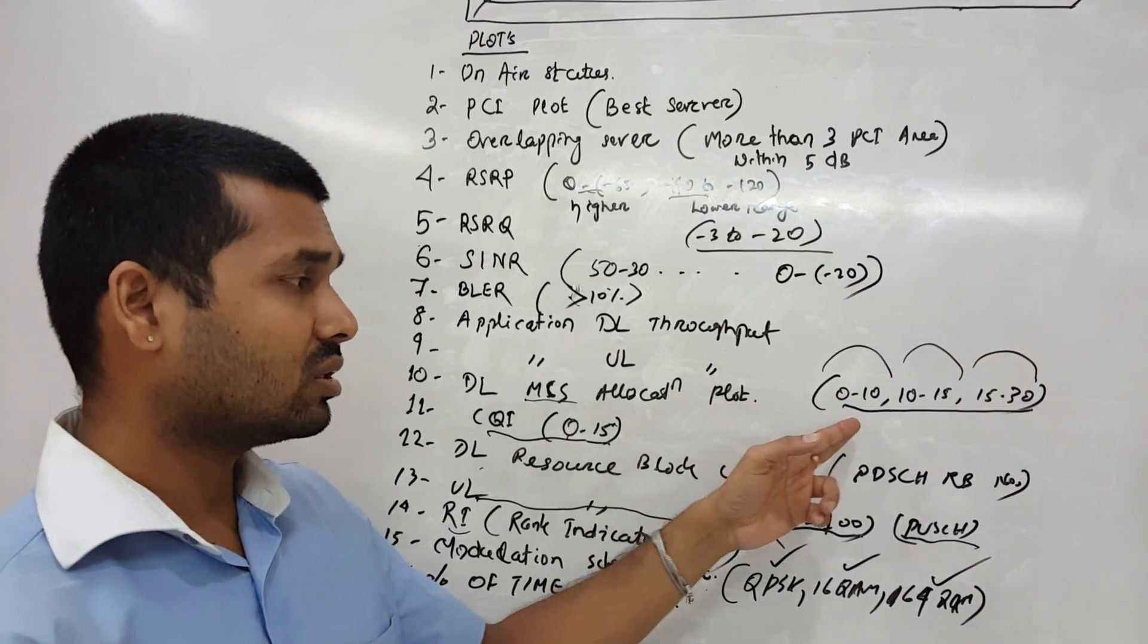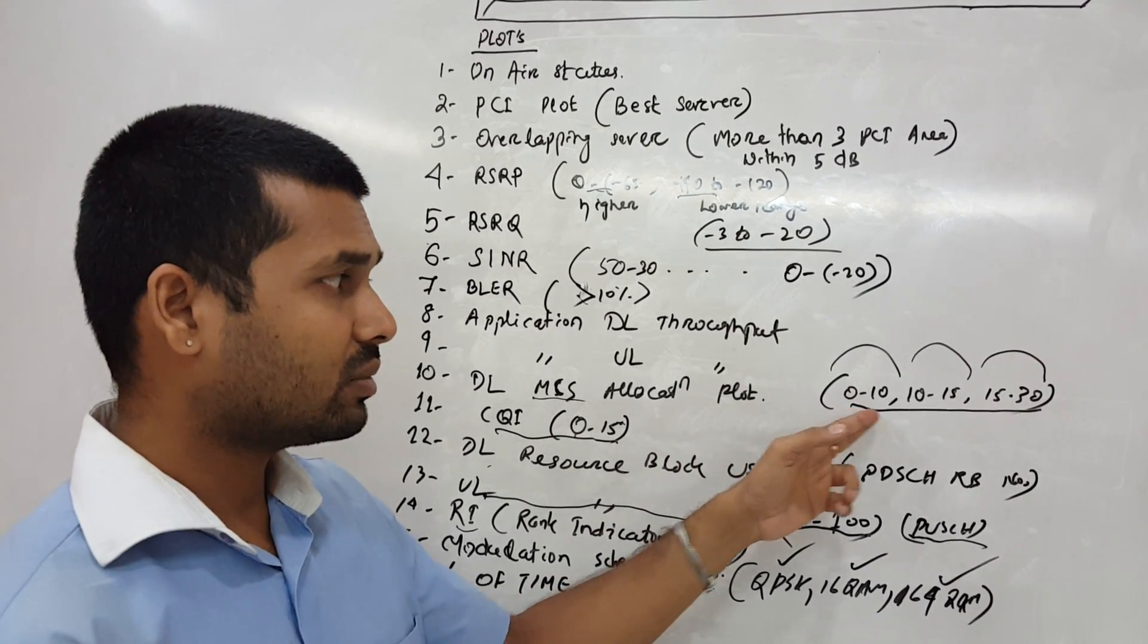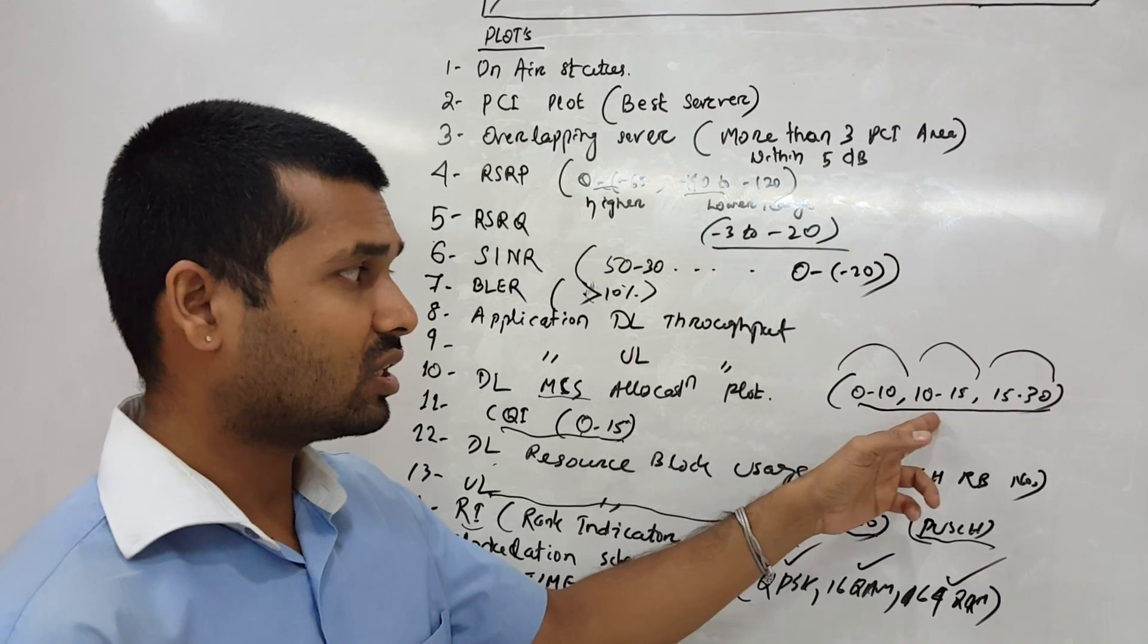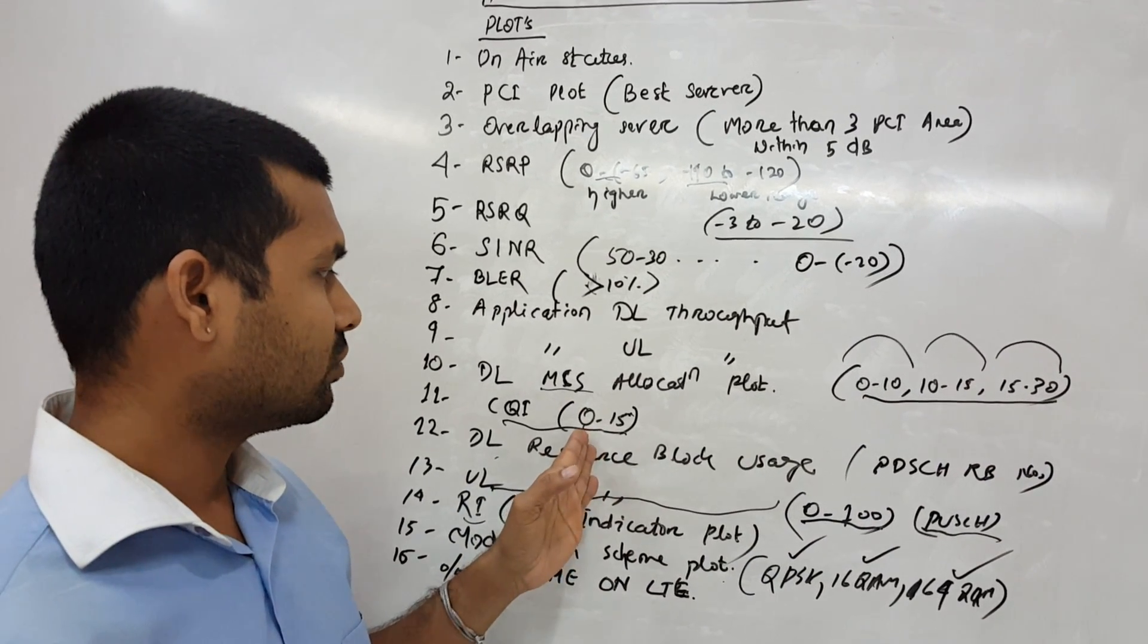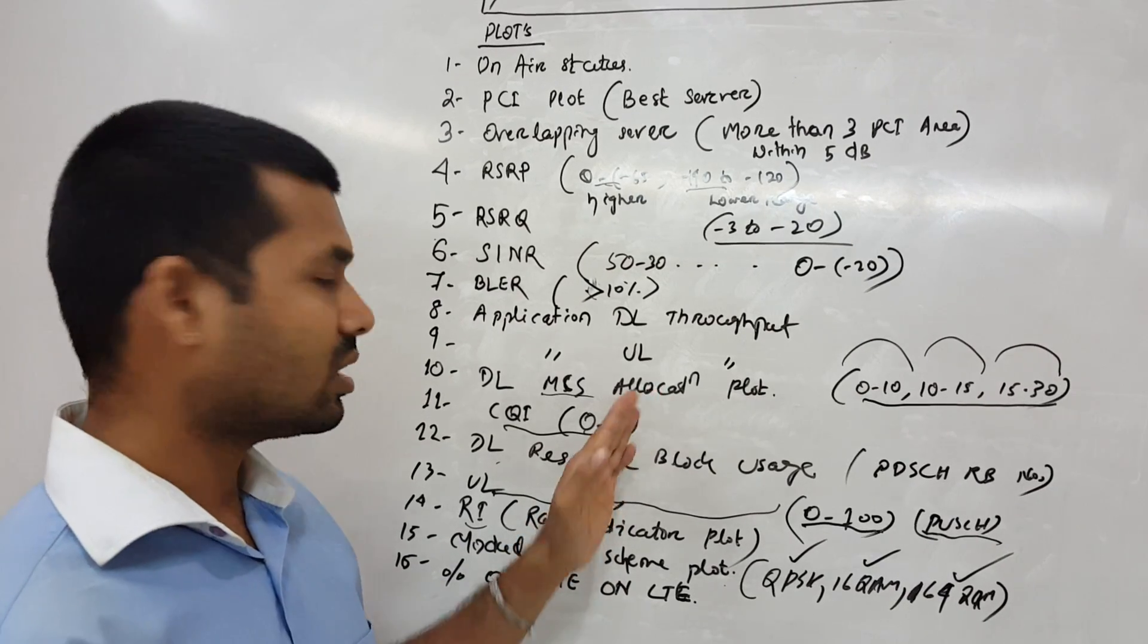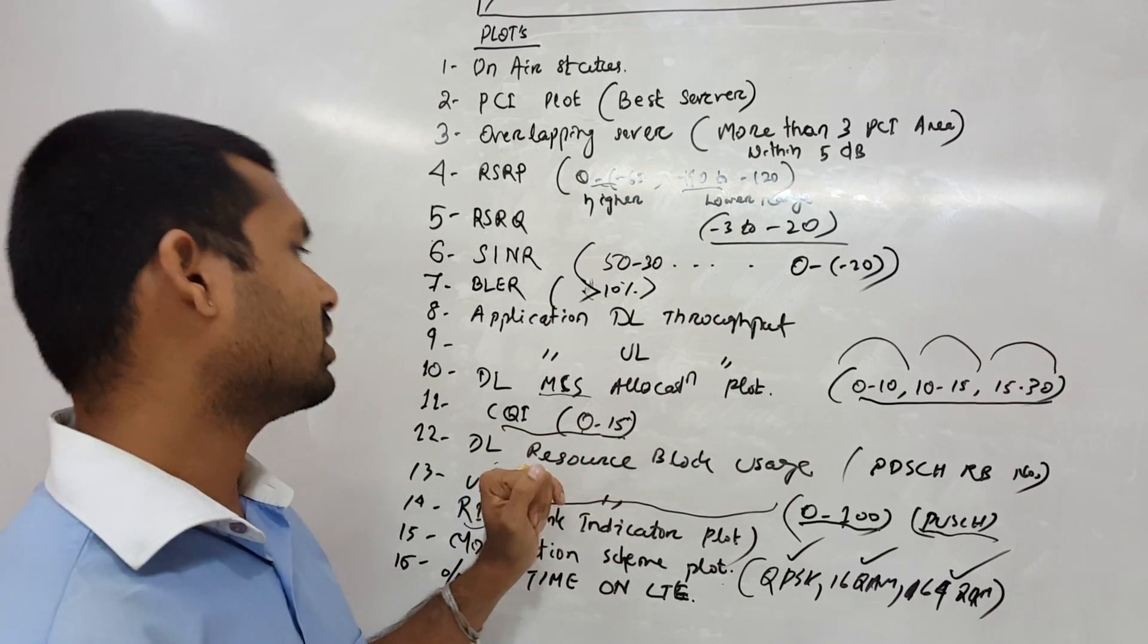Downlink MCS allocation - the range is like we are having three different regions: 0 to 10, 10 to 15, and 15 to 30. Then CQI from 0 to 15, 15 having the best value, 0 being the least value.